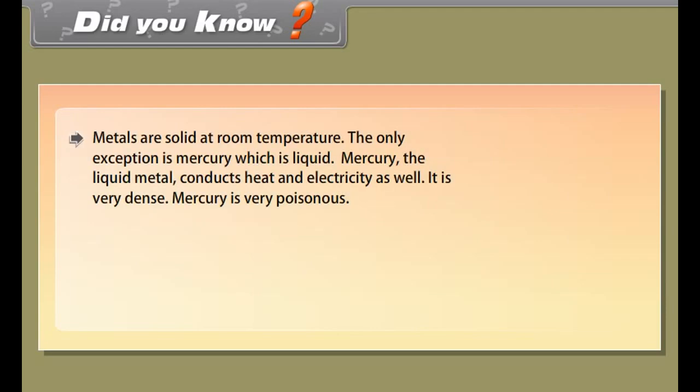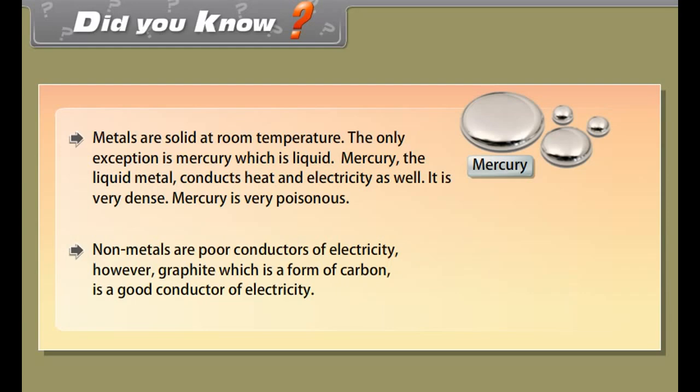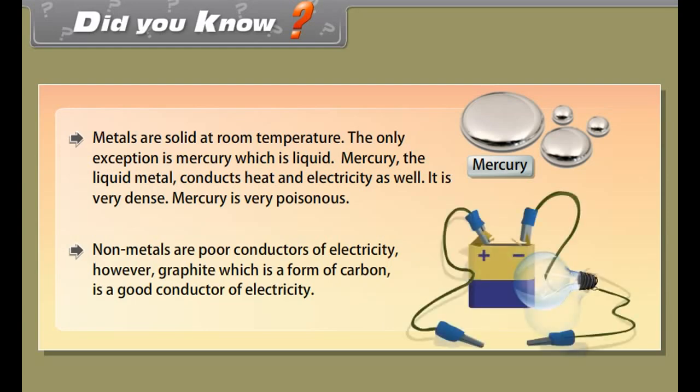Did you know? Metals are solid at room temperature. The only exception is mercury which is liquid. Mercury, the liquid metal, conducts heat and electricity as well. It is very dense. Mercury is very poisonous. Non-metals are poor conductors of electricity. However, graphite which is a form of carbon is a good conductor of electricity.